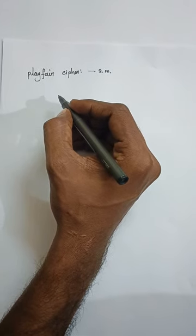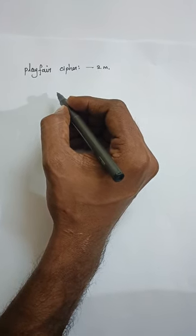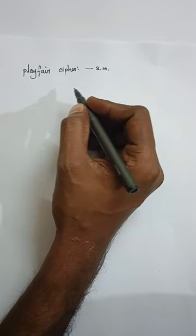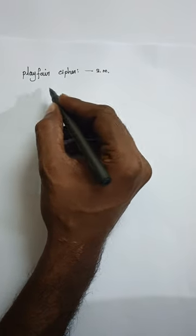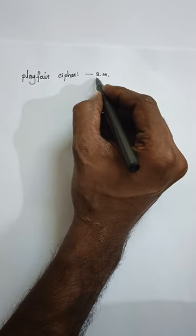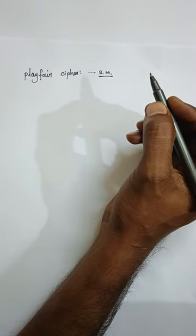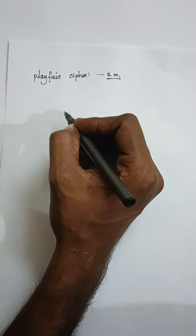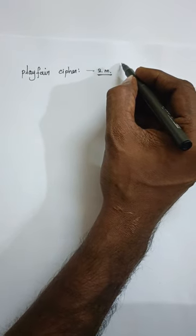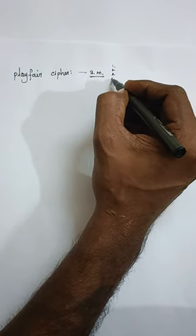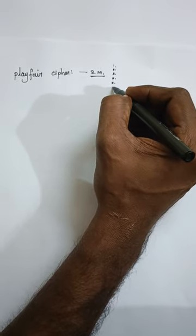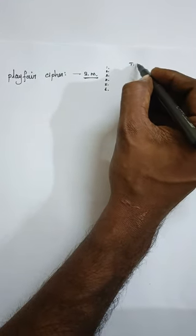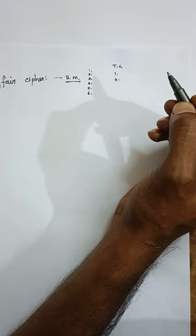Good evening guys. Last class we checked out classical encryption standards and some of the ciphers. Today we're going to check the Playfair cipher - it is one of the methods in the substitution cipher category. Classical encryption has two categories: one is substitution cipher and another one is transposition cipher. In substitution cipher we have Caesar cipher, Playfair cipher, Hill cipher, monoalphabetic cipher, polyalphabetic cipher, and one-time pad. Transposition cipher has rail fencing method and columnar method.